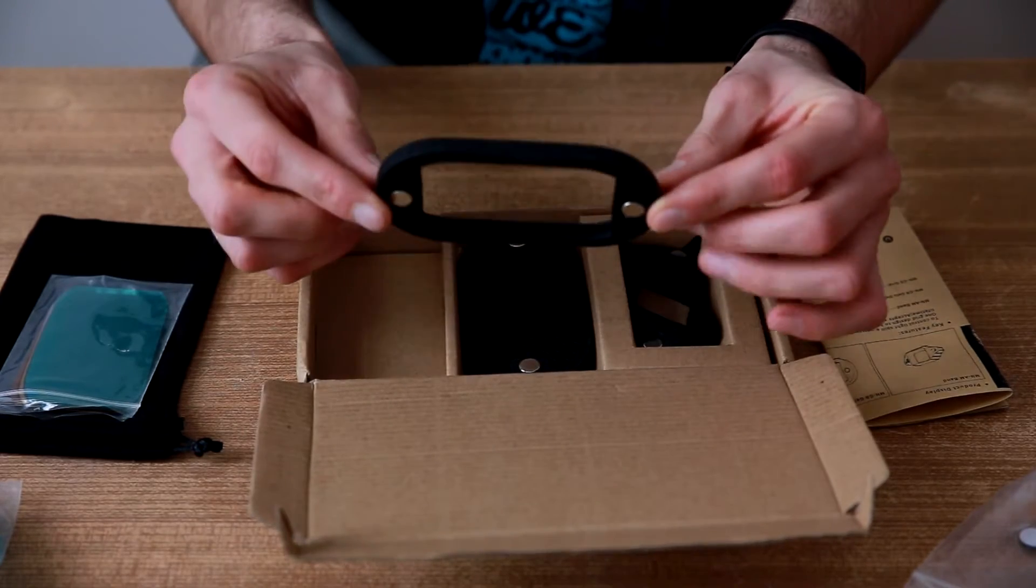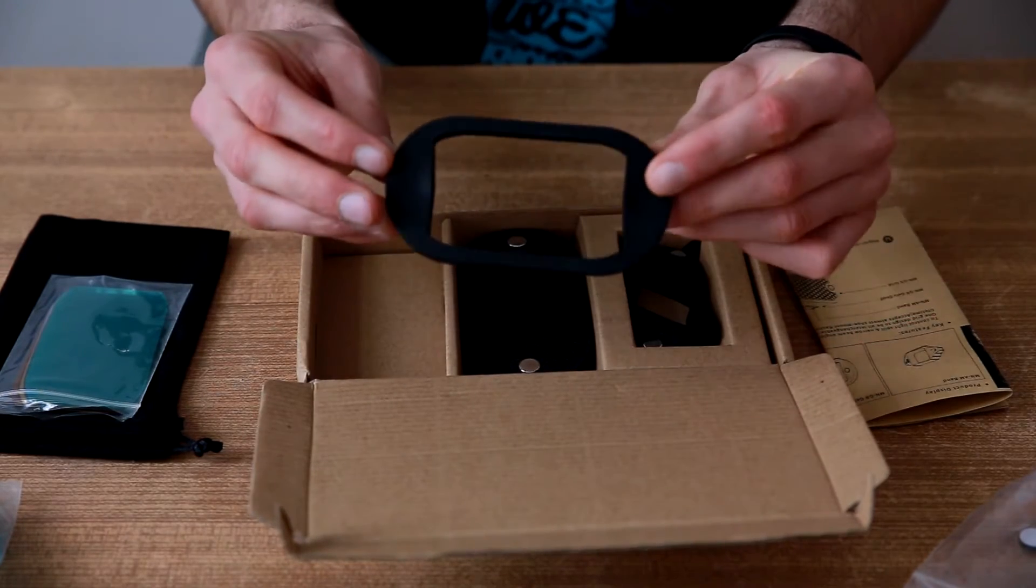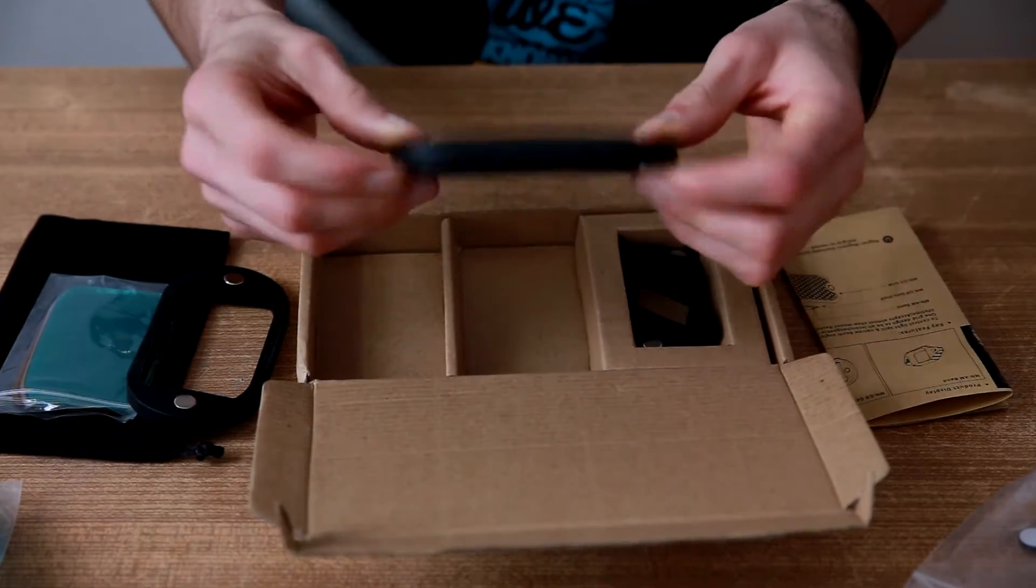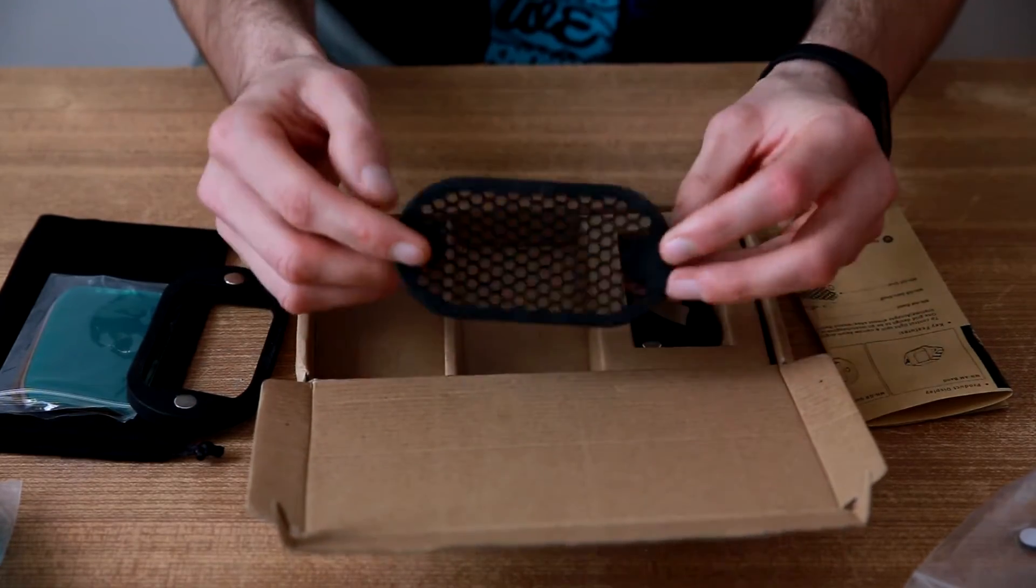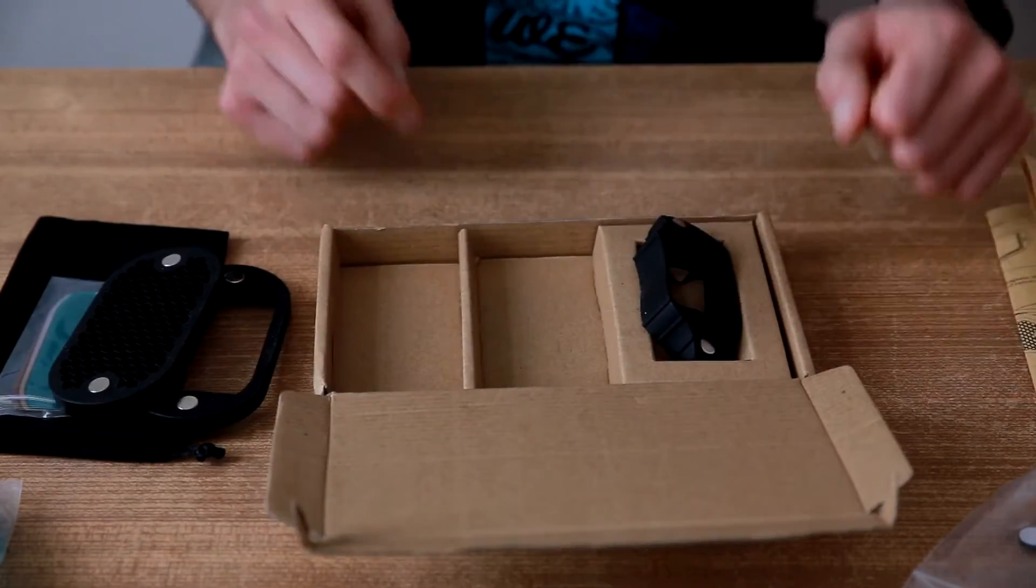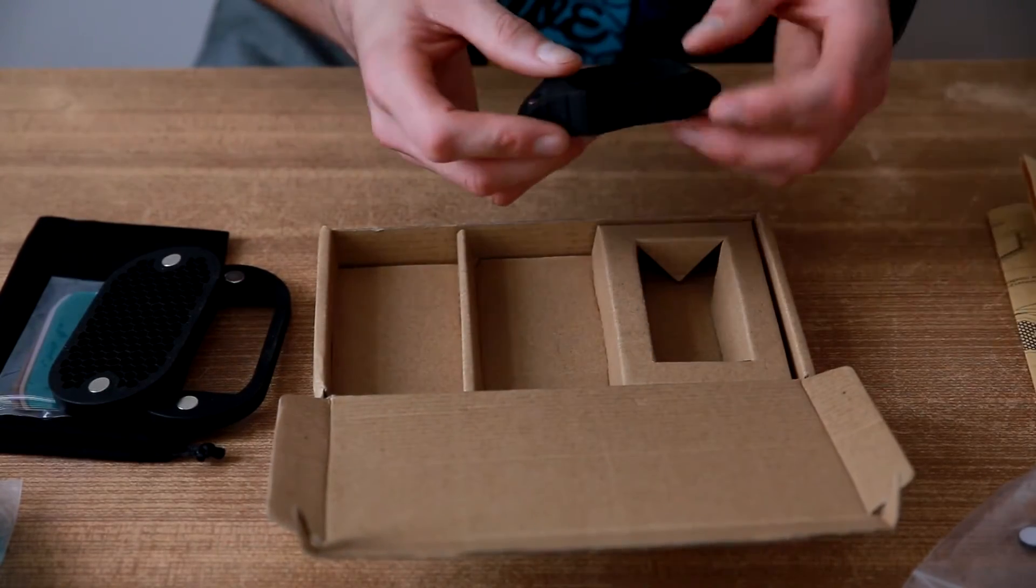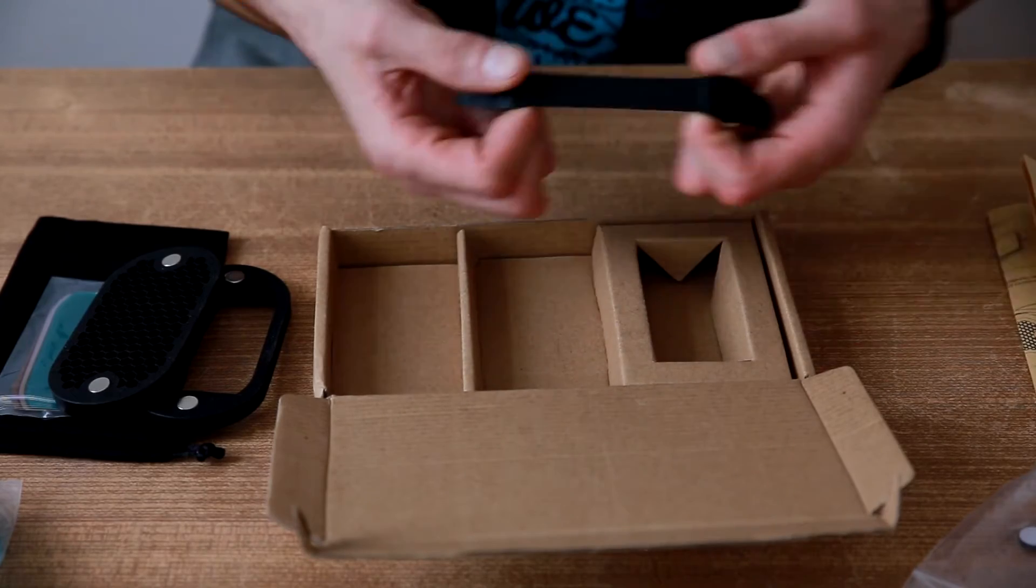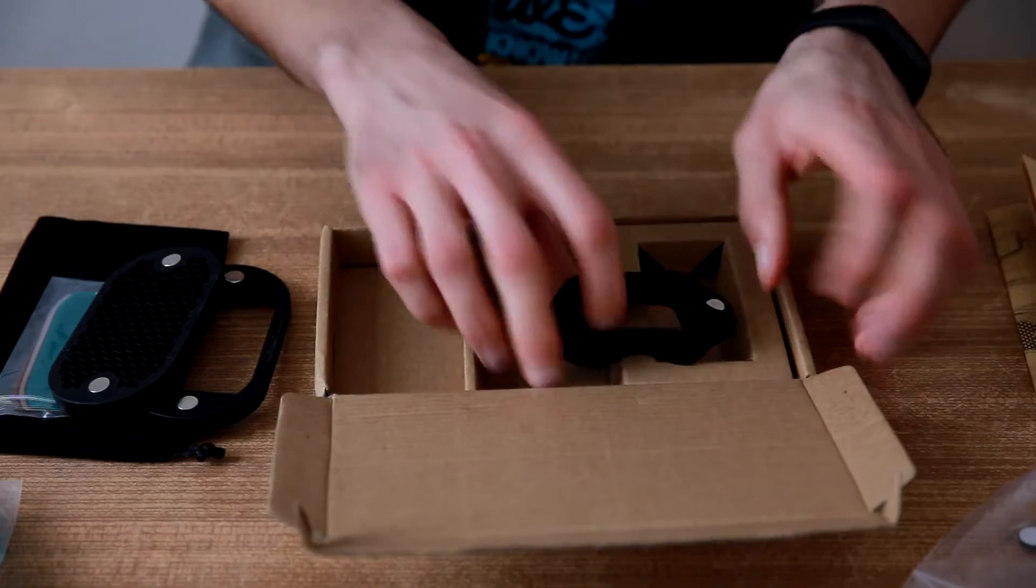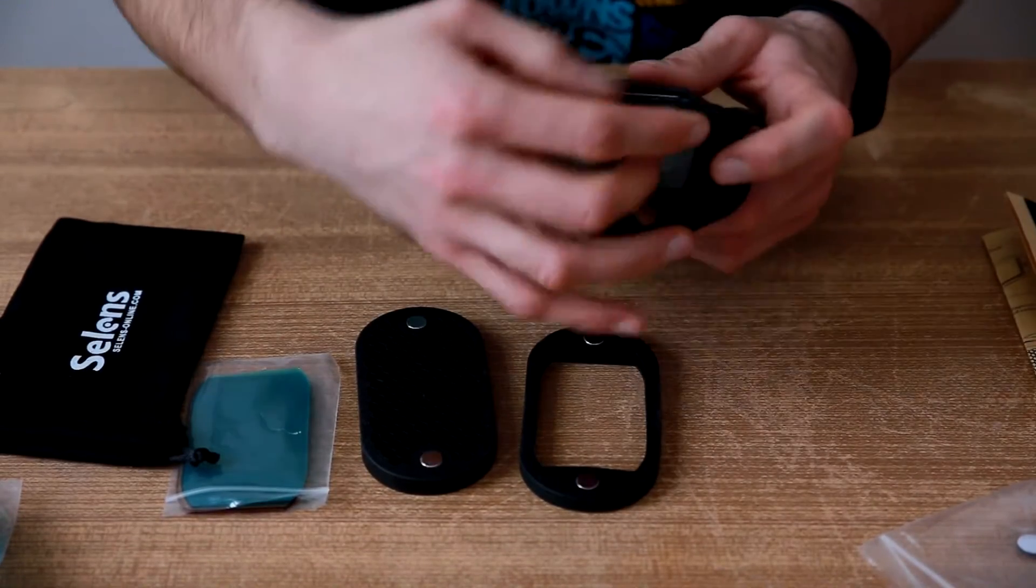Then we have the gel frame, the grid honeycomb grid, and lastly we have the gel band which goes on the flash itself. Let's see how the system works.